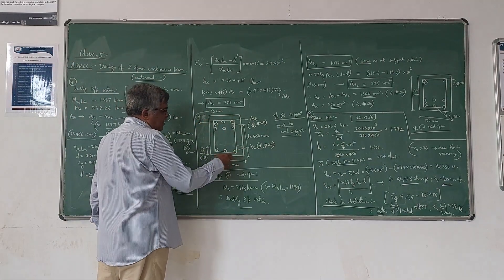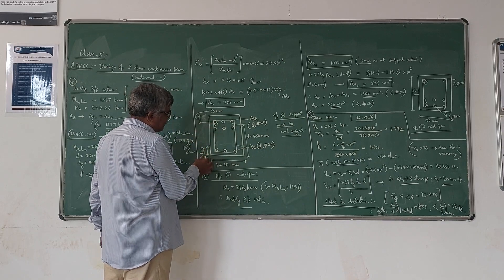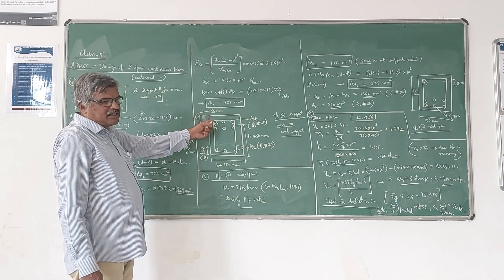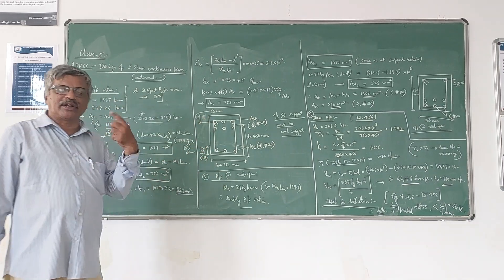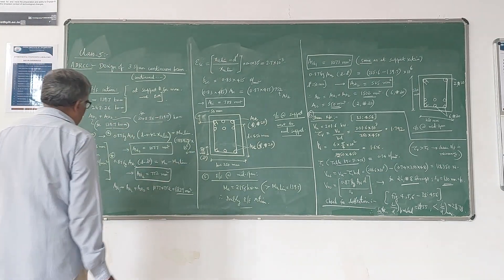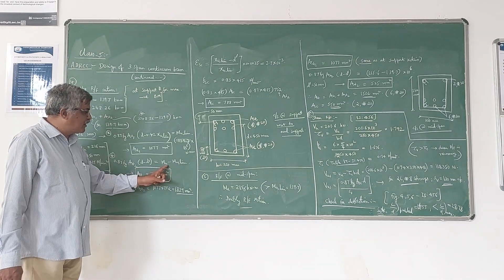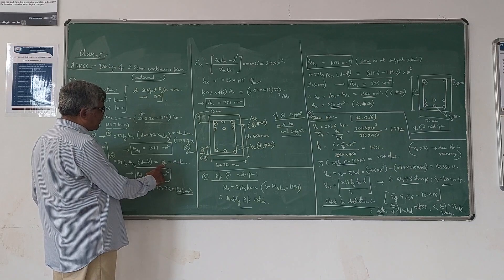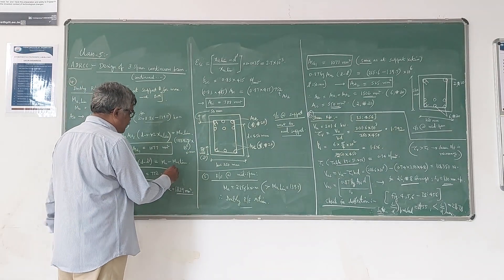For the negative bending moment, the top side becomes the tension side and the bottom becomes the compression side. The effective cover d' on the compression side is normally taken the same as that of the tension side, so d' = 50 mm. Substituting everything: the balance moment is (248.26 − 138.7) × 10⁶ Newton-millimeter.